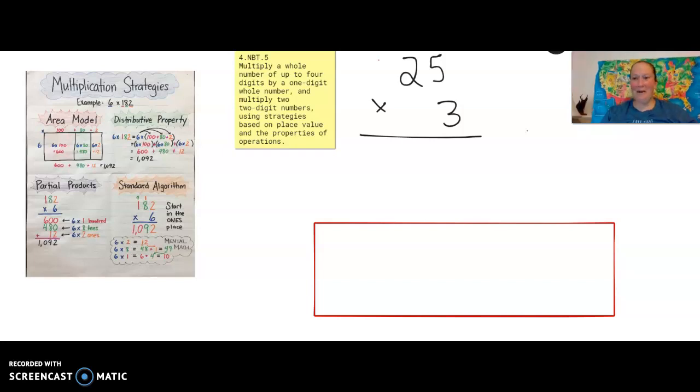Good morning. It's Mrs. Habert again here from the Syracuse Academy of Science and Citizenship. Welcome back to fourth grade math. We are on week six, day two. Yesterday we just started the standard 4.NBT.5. So today our objective, we will be able to multiply whole numbers of up to one to four digits by a one digit whole number. And today we're going to introduce multiplying two digit by two digit numbers.